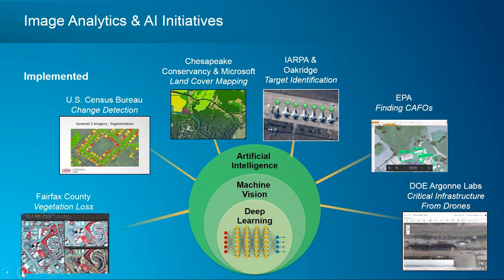Esri is working very closely on imagery analytics with artificial intelligence. We added a support vector machine classifier capability a few years ago — using machine learning to work with imagery and do classification against image segments to pull out different types of features. We're now pushing further with machine learning type processes, and you'll see this at our user conference. You'll start to see these capabilities more and more as part of mainstream feature extraction, raster analytics, and more detailed analysis of your datasets.